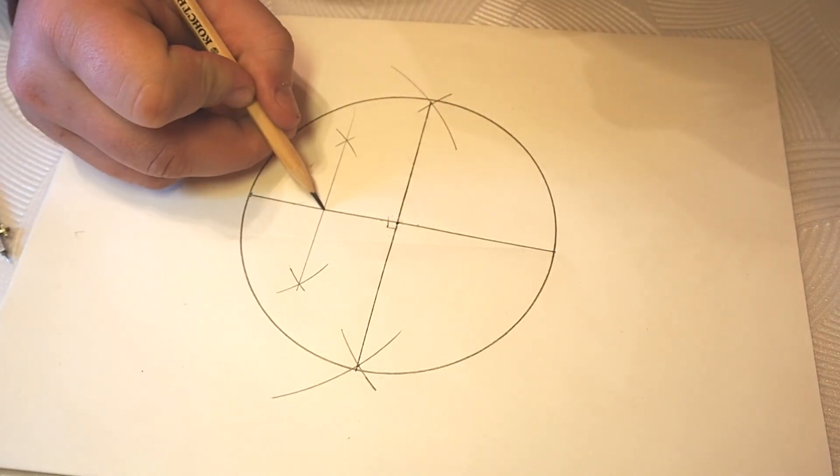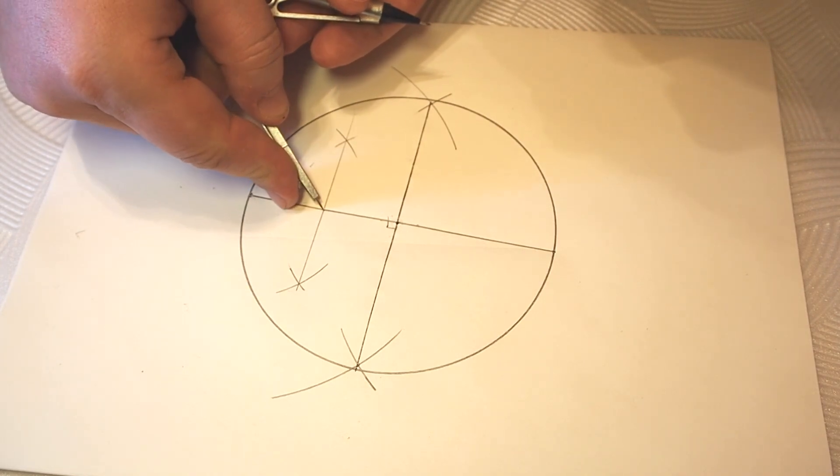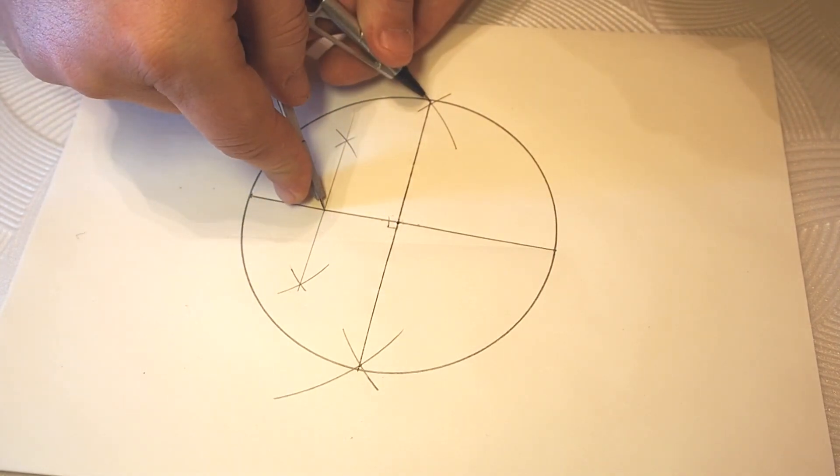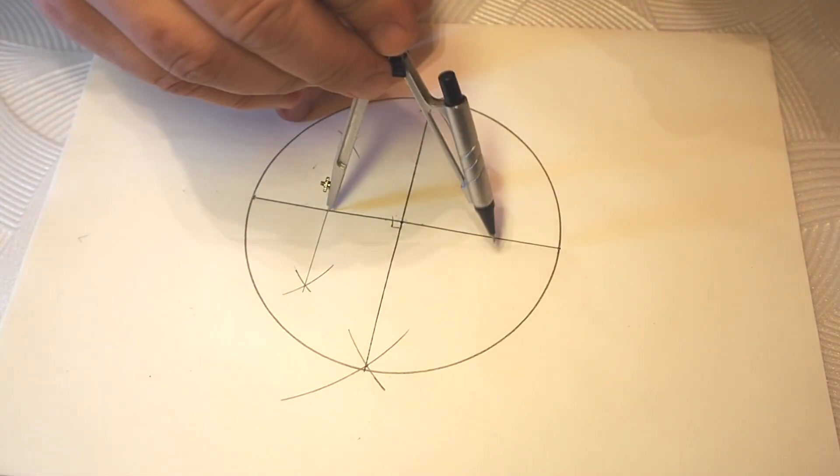What do we do next? We need to adjust our compass here and on the upper point of our circle. Here we are with another point.